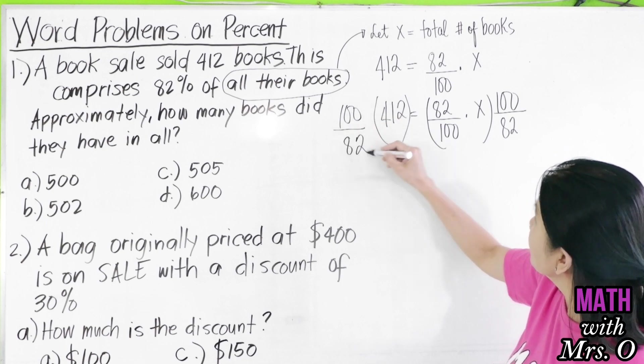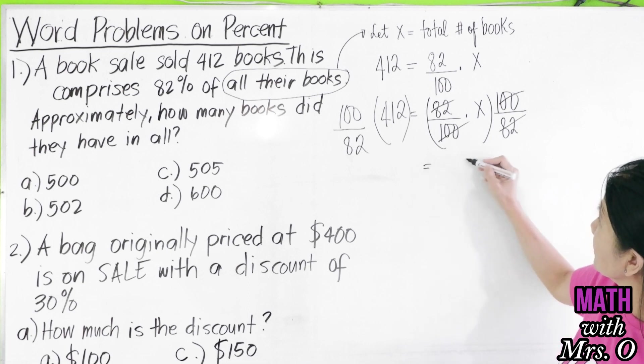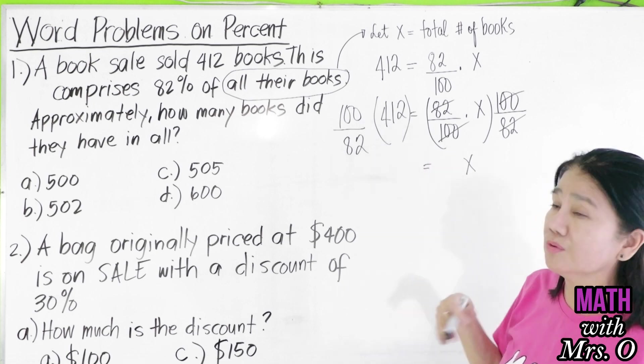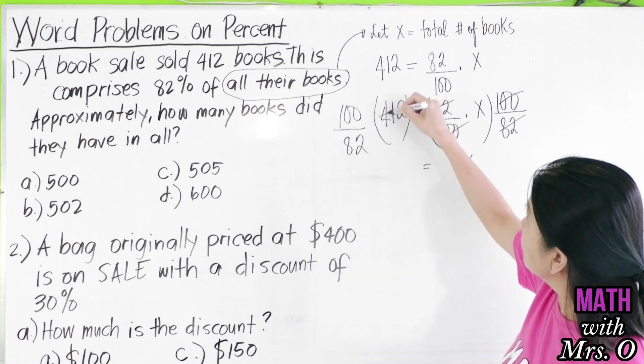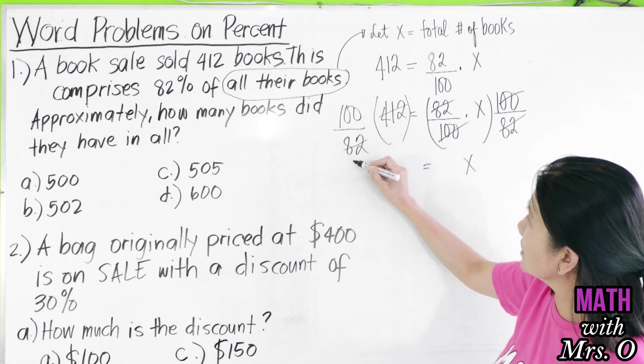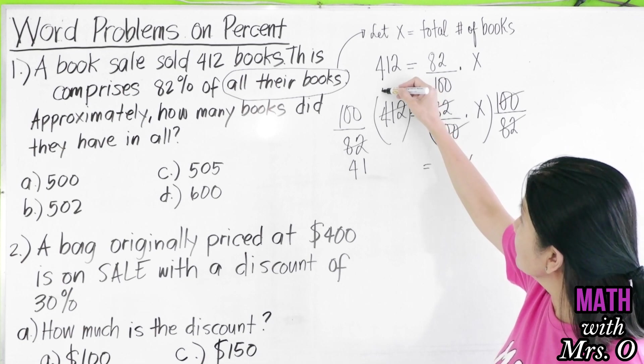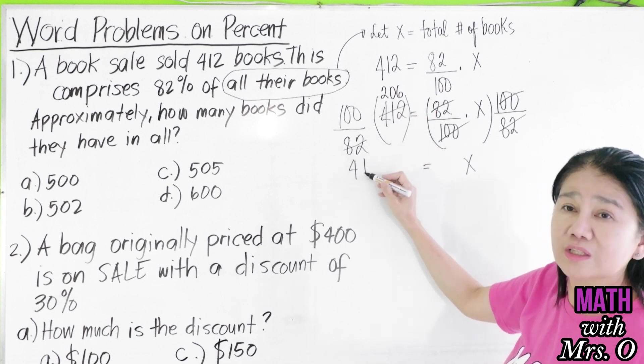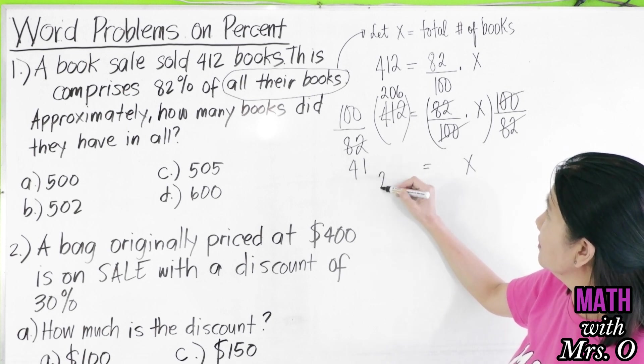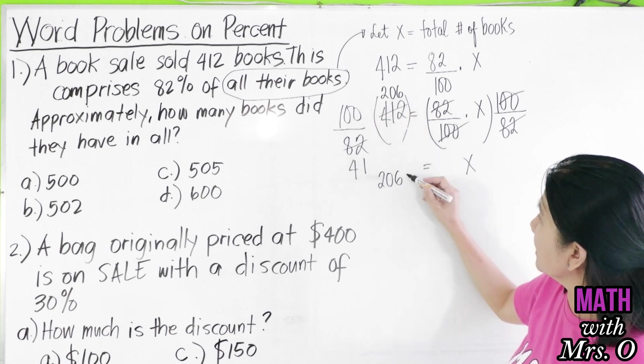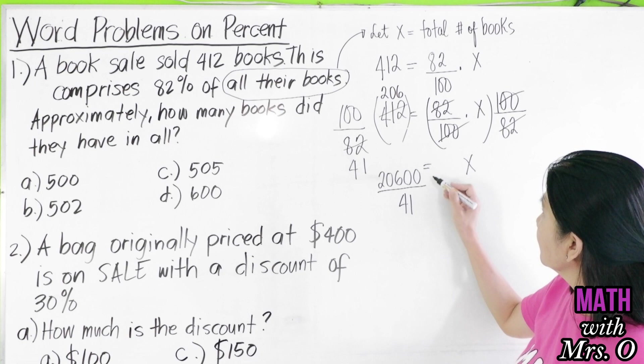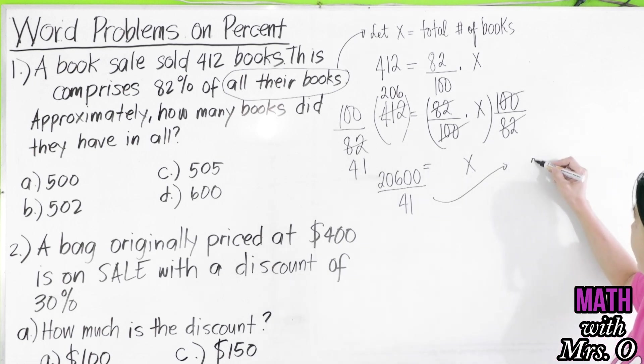So we cancel this and cancel this, you get X is equal to 412 times 100 by 82. So, you can simplify this by 2, 82 by 2 is 41, 412 by 2 is 206. Can you still simplify 206 and 41? Not anymore. So, you'll have here 206 times 100, you just put two zeros over 41 equals X. And now, let's divide 20,600 by 41.